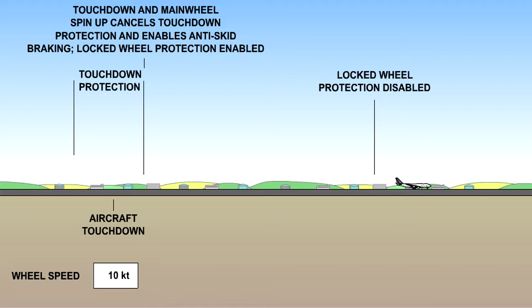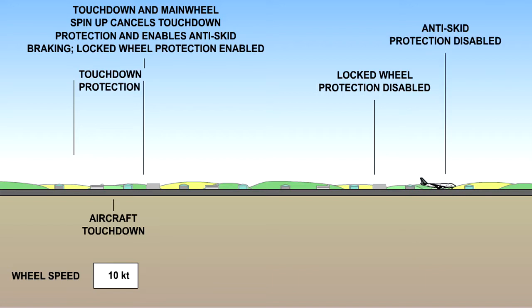Finally, on some systems, as the aircraft slows through about 10 knots, the entire anti-skid system is disabled, and braking is completely in the hands — or more correctly, the feet — of the pilot.